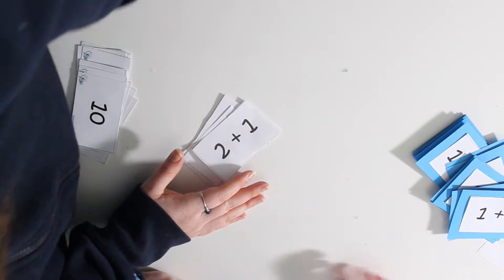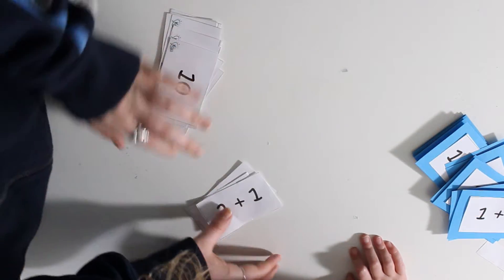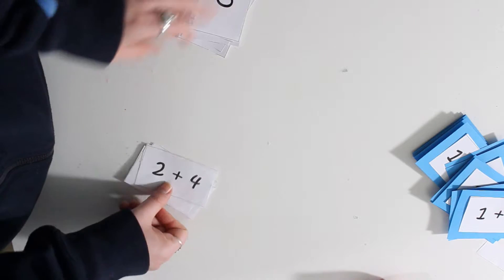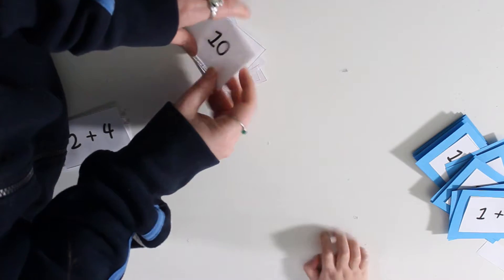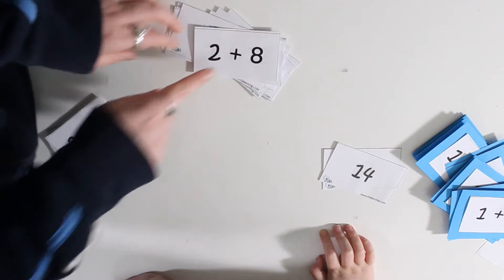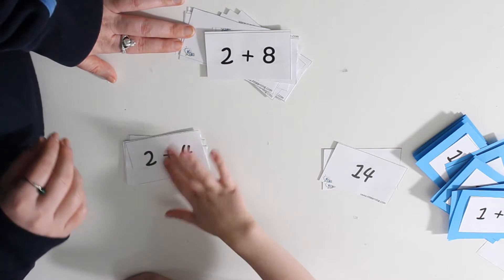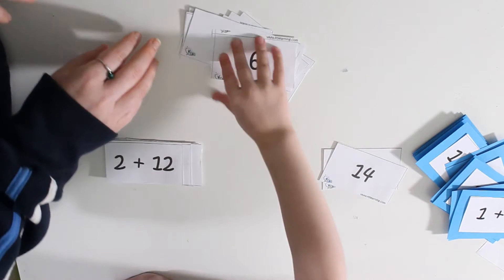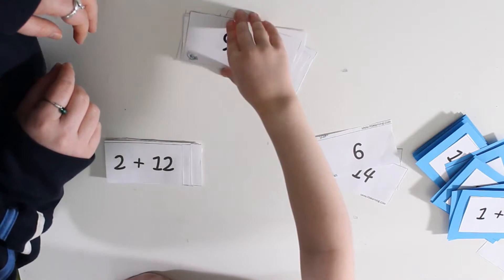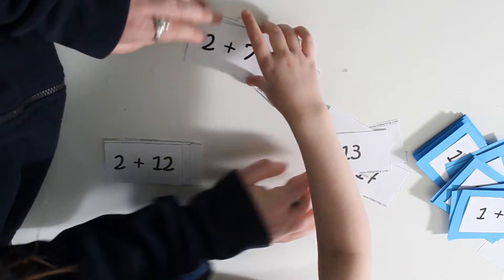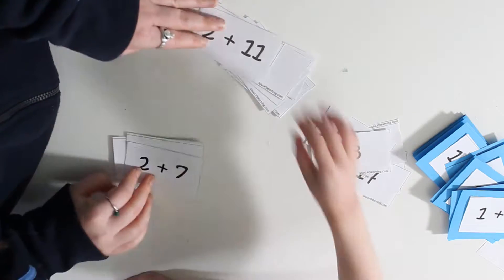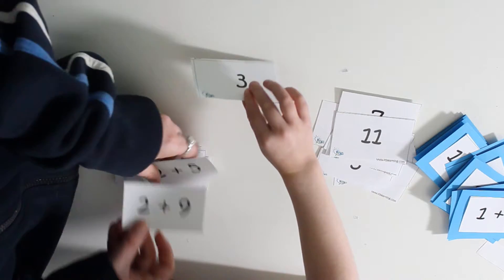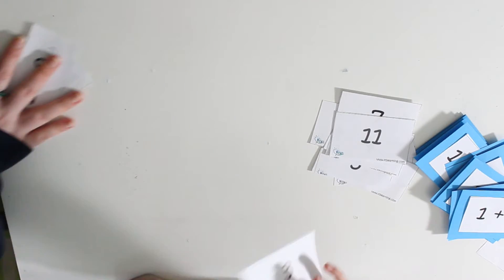All right, so the next thing we need to do is separate these into the addition pile, so like two plus one, two plus two, two plus three, two plus four, and the number pile. So ten, fourteen goes there. Which pile does two plus eight go in? And that one, right, like that. And two plus twelve goes in there too. Can you start moving things over?